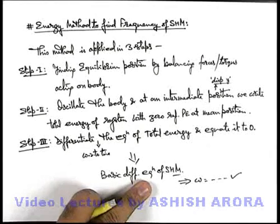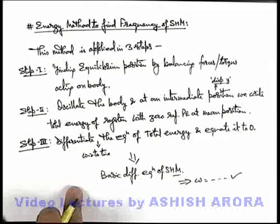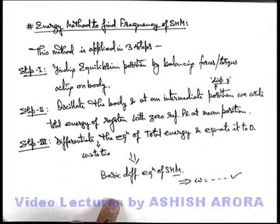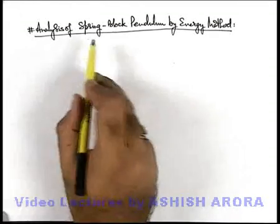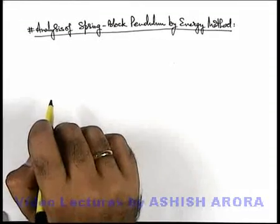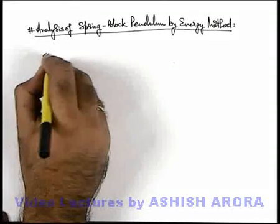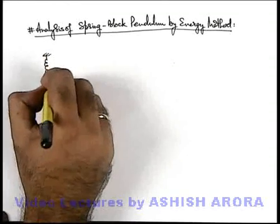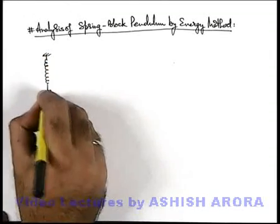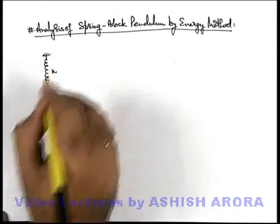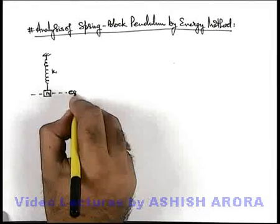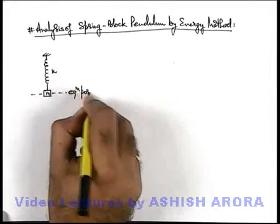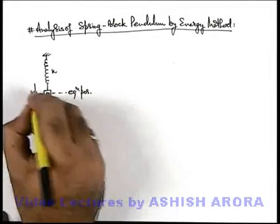Just now we have written it in a text form. Let's take up some basic illustration to understand these steps and then we'll take up some numerical examples also. Let's analyze spring-block pendulum by using energy method. Say we are given with a spring-block pendulum. In its equilibrium position the block is of mass m and spring is of constant k. And say this is the equilibrium position.